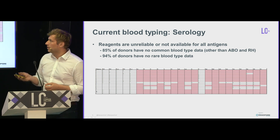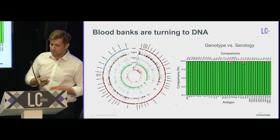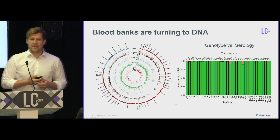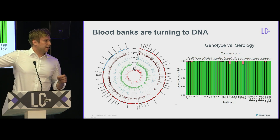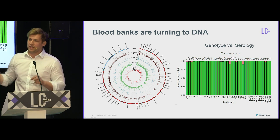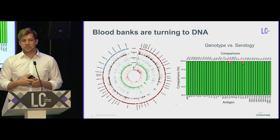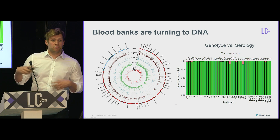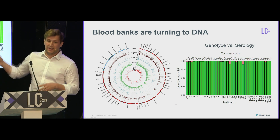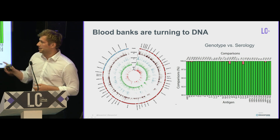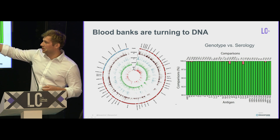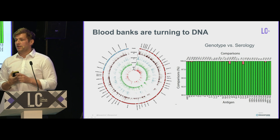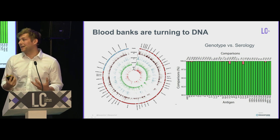What can we do about this? In recent years, blood banks are turning to DNA. This CIRCOS plot represents around the edge the protein sequences for all blood group genes in red — genes that encode blood group antigens — and in blue we have the platelet antigens. The important innermost ring shows red lines representing coding variants in those genes that directly encode blood group changes.